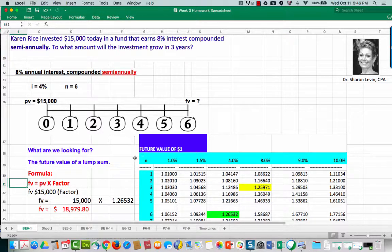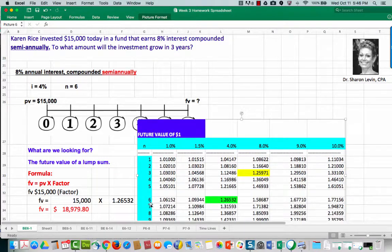Using the table, we see that the n, or the number of periods, is in the far left column. We're going to scroll down to where n equals 6 periods, and we're going to scroll over to 4%, which is our 8% divided by 2. The factor that we see in the table is 1.26532. So we will take that factor from the time value of money table and plug it into our formula.